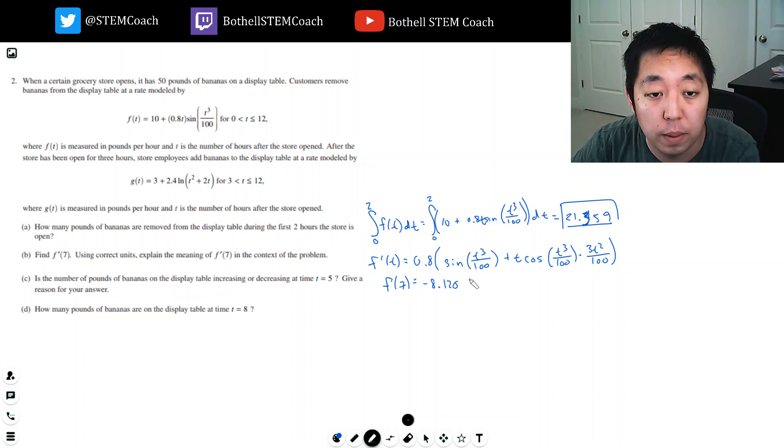The units of this: well, f(t) is units pounds per hour, so this would be pounds per hour squared.